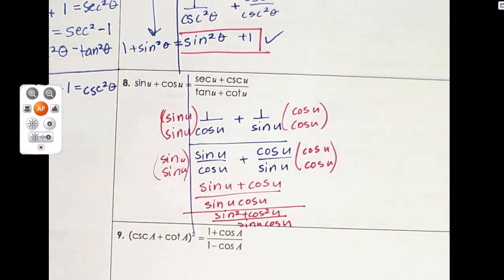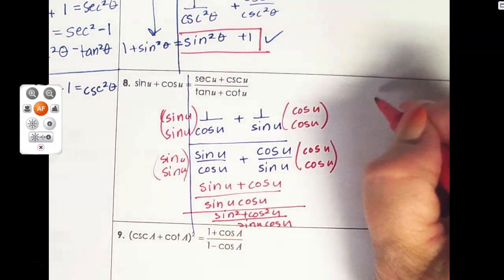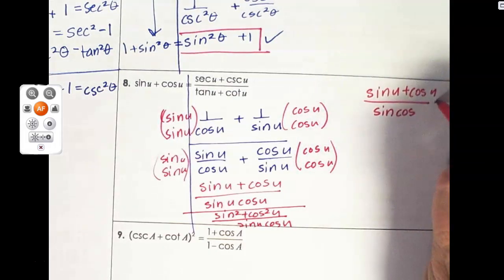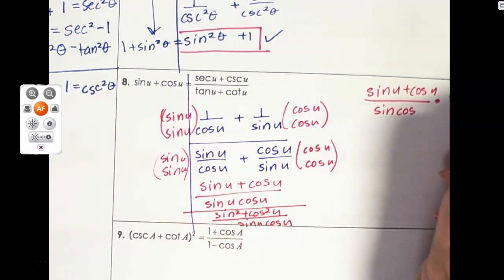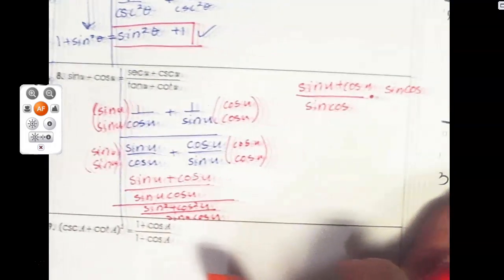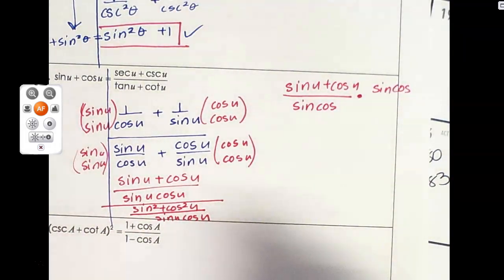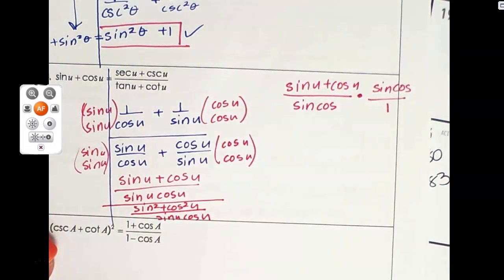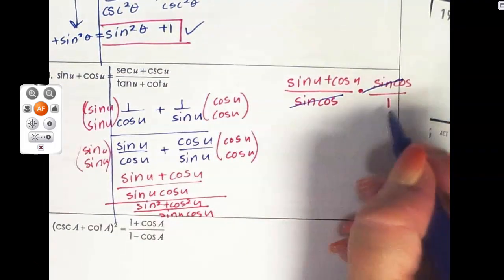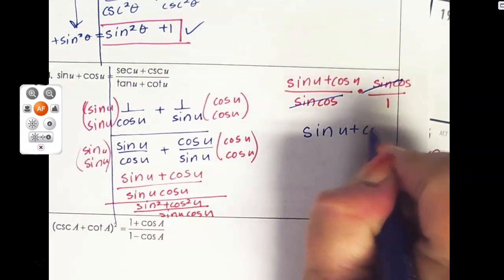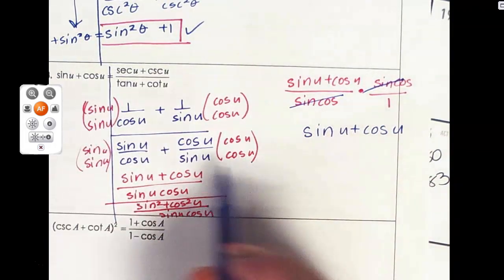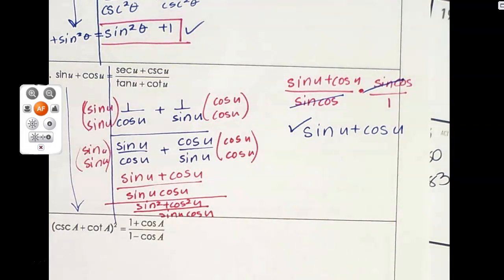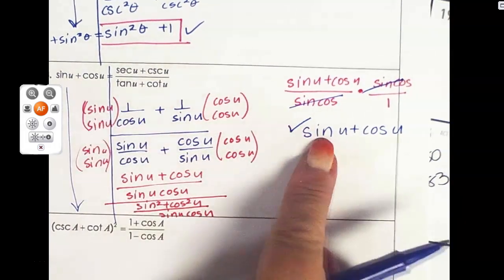Up top I have sine plus cosine over sine cosine, and on the bottom I have sine squared plus cosine squared — which equals one — over sine cosine again. I'll do a keep-switch-flip: on top I've got sine plus cosine, times sine cosine, divided by that sine squared plus cosine squared which I can just write as one. Those cancel, and I end up with sine u plus cosine u — that's what I was going for. I'll check it off that I got what I wanted from my identity.